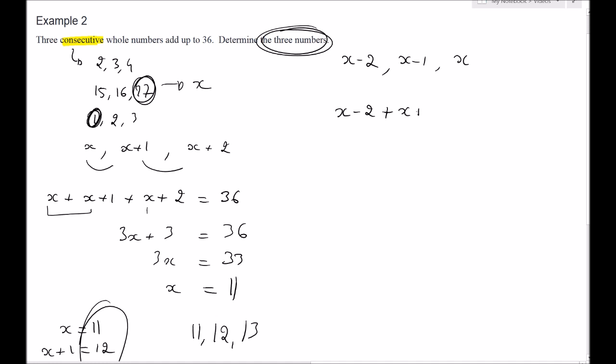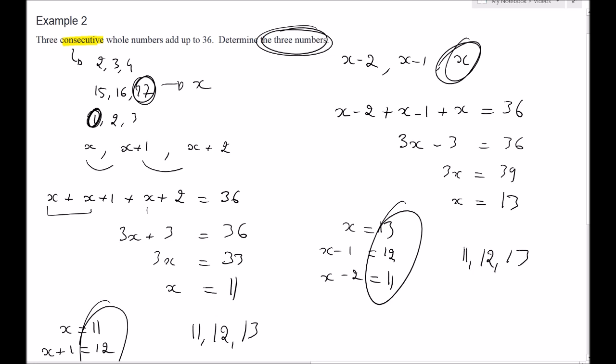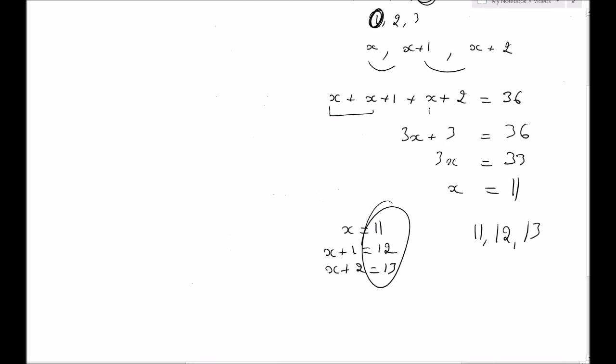If you add them up you should also get 36. Again, 3x but now it's minus 3 and that should be 36, so 3x is now 39, so x is now 13. My x is different but that doesn't really matter because in this case x is my last number, so my three numbers are 13, 12, and 11. It's not always one right way to do it.